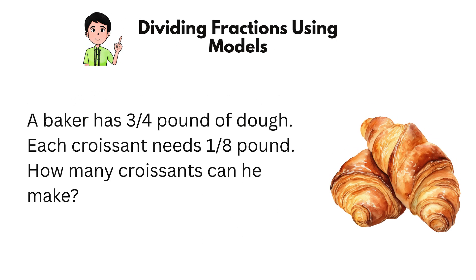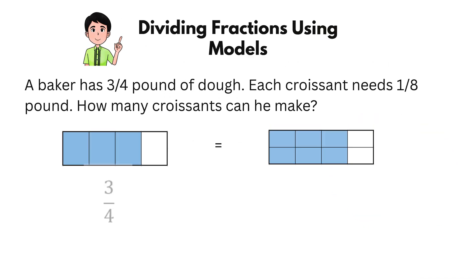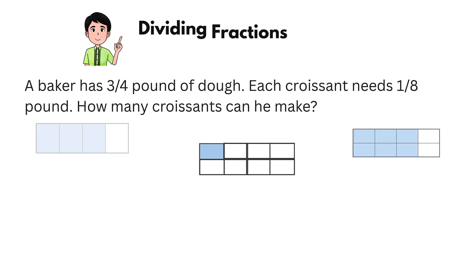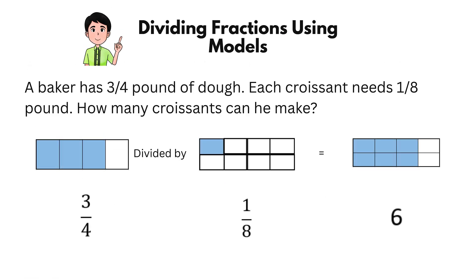Here's another. A baker has three-quarters of a pound of dough. Each croissant needs one-eighth pound. How many croissants can he make? Since three-quarters equals six-eighths, there are six one-eighth parts in three-quarters, so the baker can make six croissants. Delicious math!